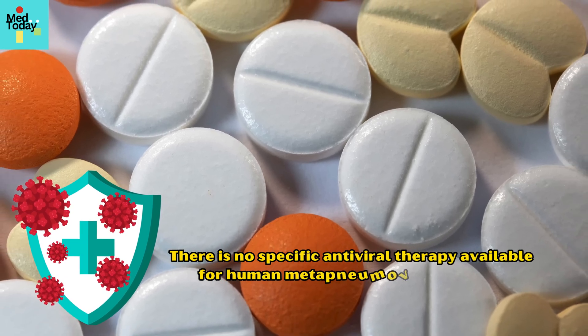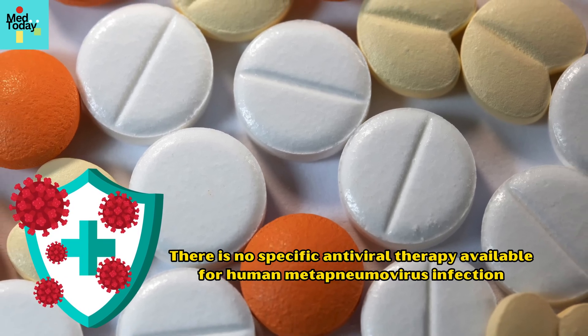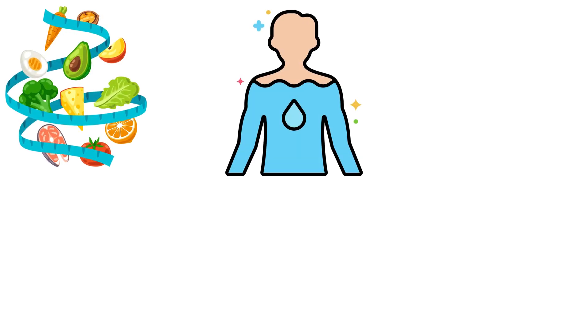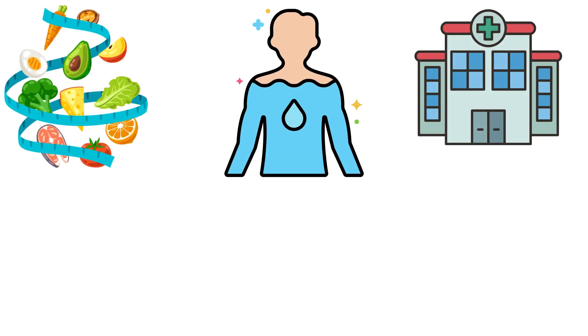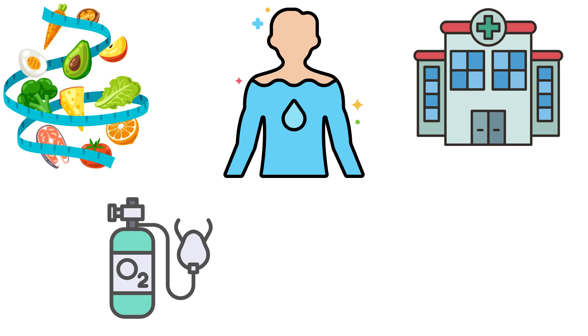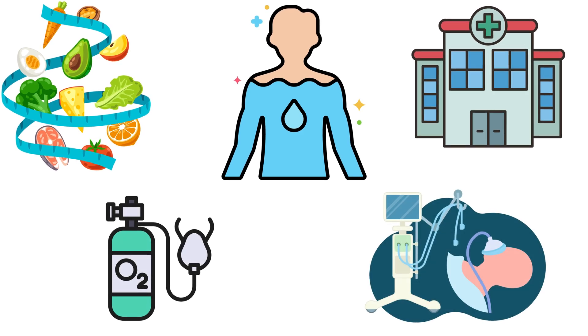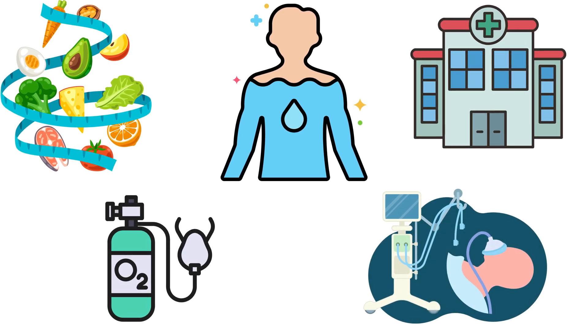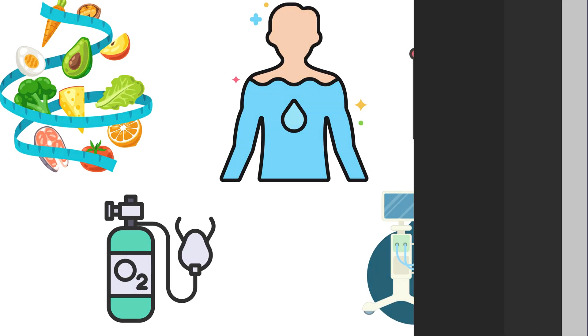There is no specific antiviral therapy available for human metapneumovirus infection. Therefore, most treatment is supportive. These include nutritional optimization, adequate hydration, hospitalization, supplemental oxygen, and mechanical ventilation if the infection is severe.